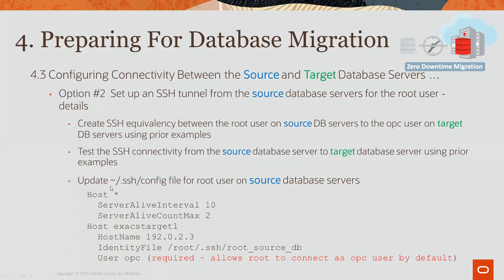You would add in your SSH config file another block that would include the name of your target host, the hostname or IP address, the identity file — i.e. the private key for the root user — and then the target user that you want on the target database or target host, which in this case is OPC.